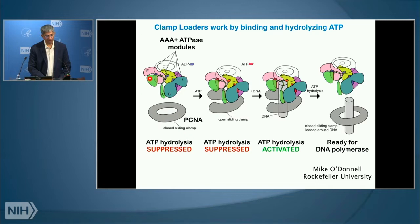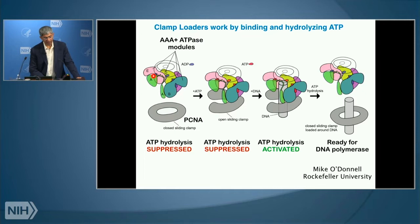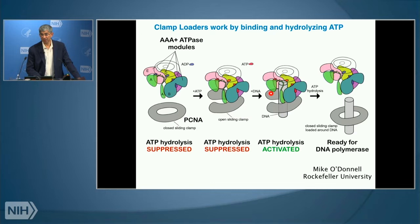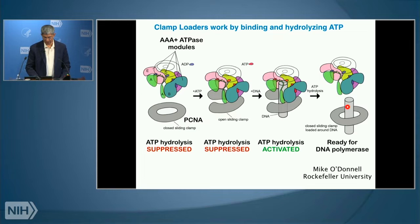In the T4 phage clamp loader, there are two genes that encode the five-protein complex. One gene encodes a degenerate AAA-plus protein — it doesn't look like the others, but originated long ago from them. The other gene encodes four ATPases labeled B, C, D, and E. Together they form an assembly that does not hydrolyze ATP until it recognizes the sliding clamp (called PCNA in eukaryotes) and a primer-template junction. When those two things are recognized, the assembly hydrolyzes ATP, releasing the clamp loader from the sliding clamp and DNA, leaving the sliding clamp on DNA.